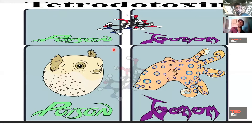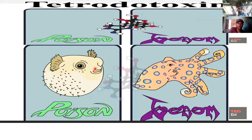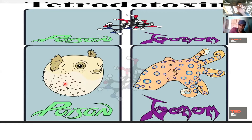Tetrodotoxin is a thousand times more toxic than cyanide and is artificially synthesized. We have a few poisonous examples from this. We release our prey and release our body water, and the poison is diffused by the prey surface.